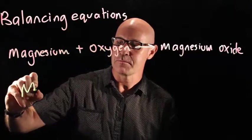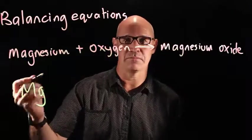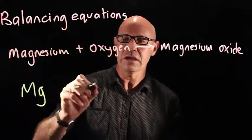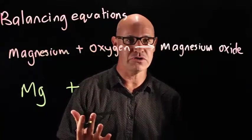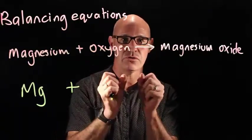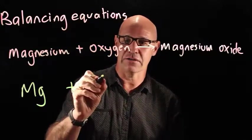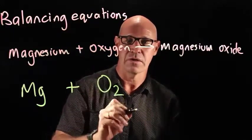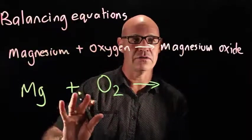So magnesium metal is just Mg. Now with oxygen we need to remember that oxygen exists as two atoms of oxygen together, as O₂. Then we have our arrow — so these are our reactants.